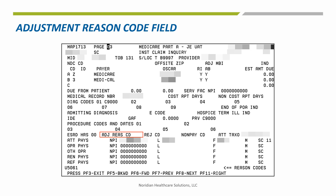On page 3 of the claim, the adjustment reason code for a cancel claim should be left blank. While a claim adjustment would process with a code in this field, nothing should be entered here for a claim cancel.